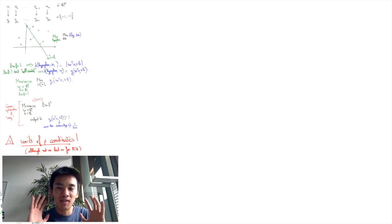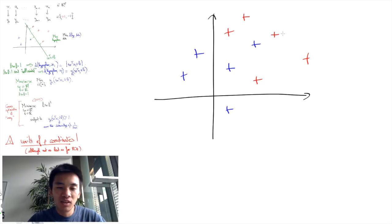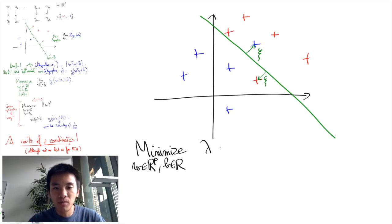This is a very restrictive assumption. To work for any data set, we need to deal with the case where points are not linearly separable. The trick is to allow for errors which are proportional to the margin by which the error has been made.